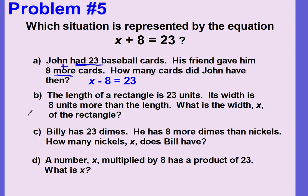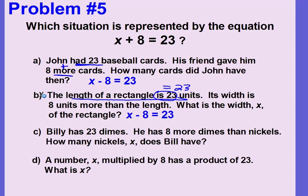Answer choice B: The length of a rectangle is 23 units. Its width is 8 units more than the length. What is the width, x, of the rectangle? The length is 23, so that's our equals amount. The width is 8 more than the length, and we're looking for the width. So this would also give x minus 8 equals 23 — not the equation we're looking for.